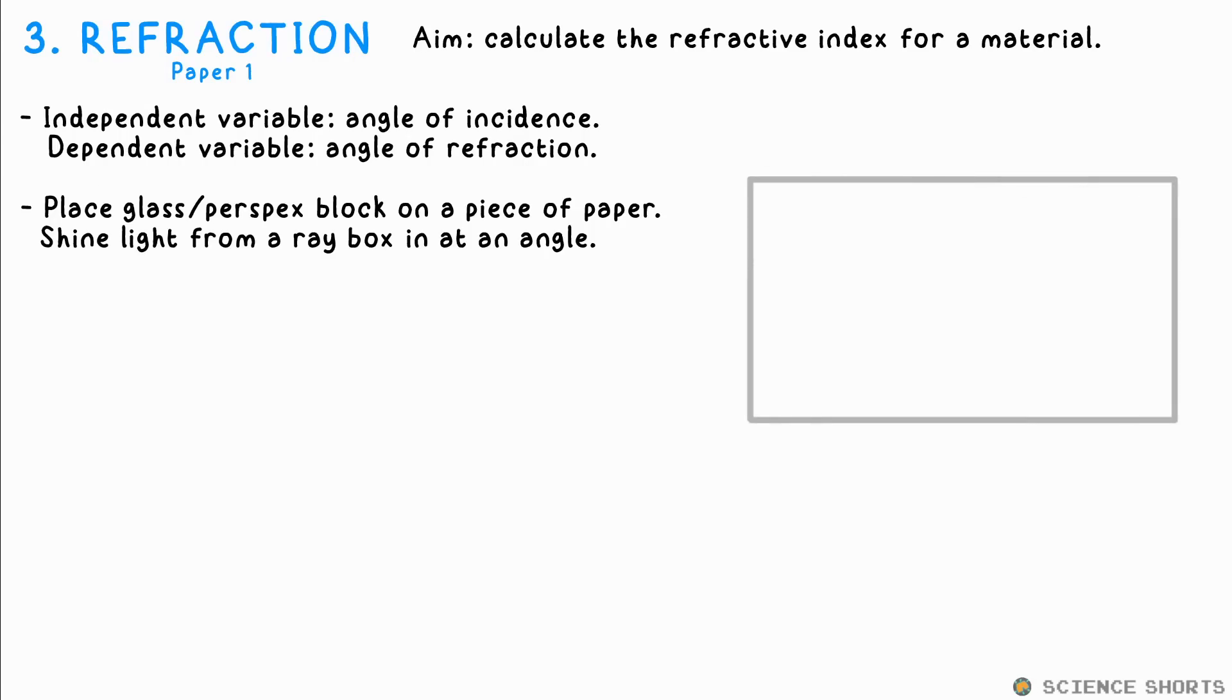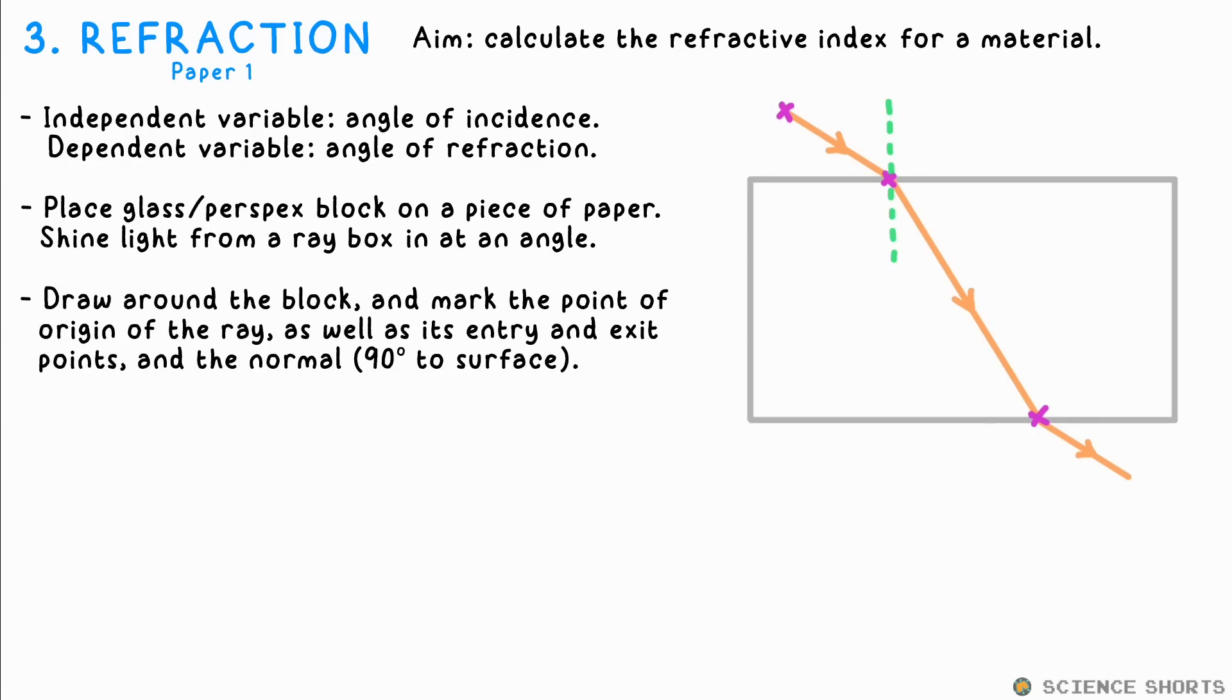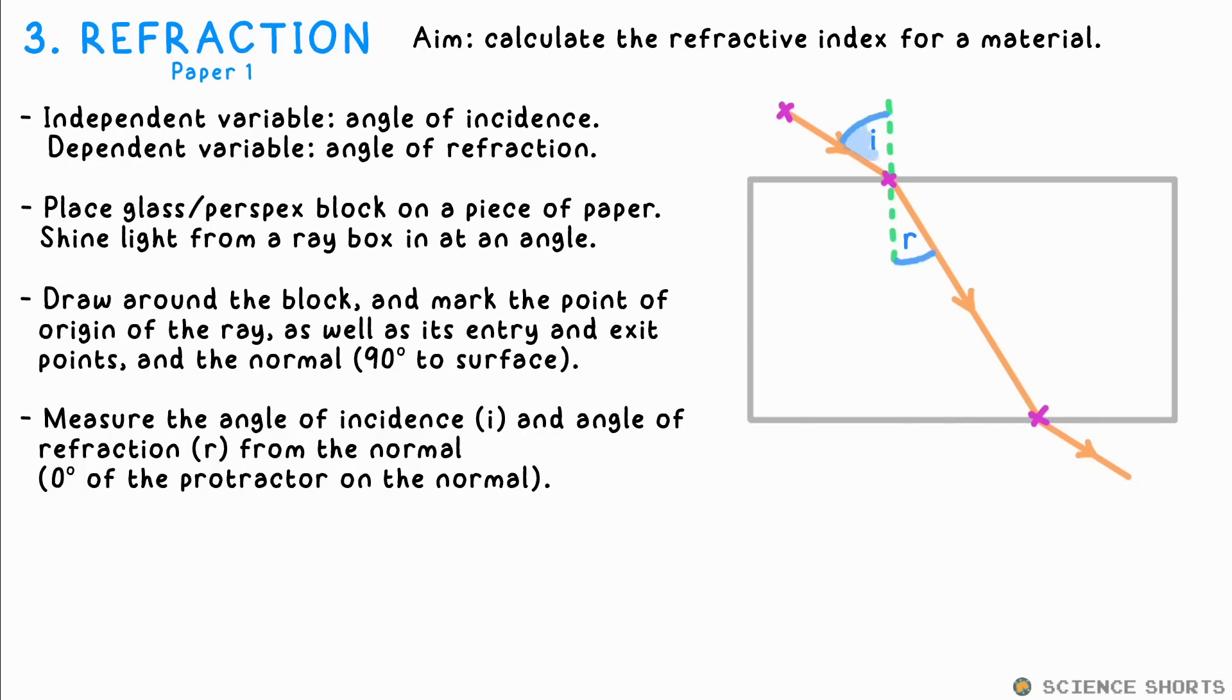Physics three, refraction. All we do is shine a ray of light from a ray box into a glass or perspex block. We draw around the block, mark where the light enters and leaves, join these up with a ruler, and then measure the angles of incidence and refraction. Don't forget that every angle must be measured from the normal, the line that's 90 degrees to the surface. We could use a semicircular block instead.